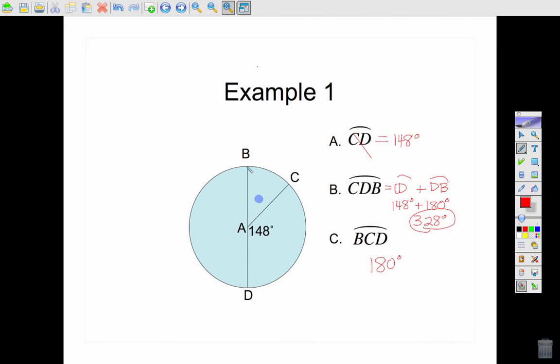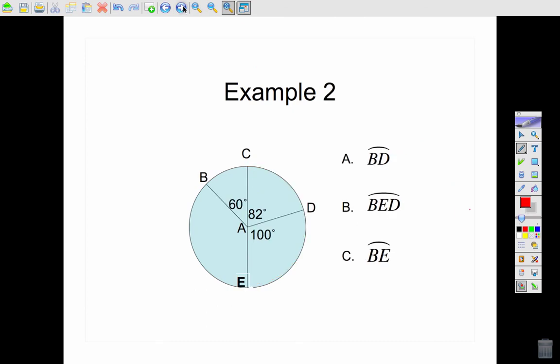So if I look at BCD, this is really not cooperating for me today. BCD is just halfway around the circle, and that's always 180.